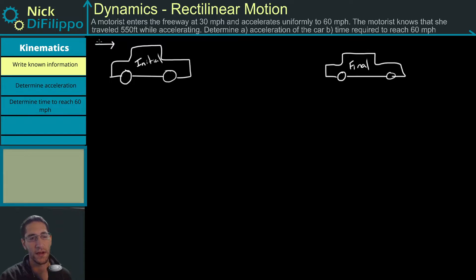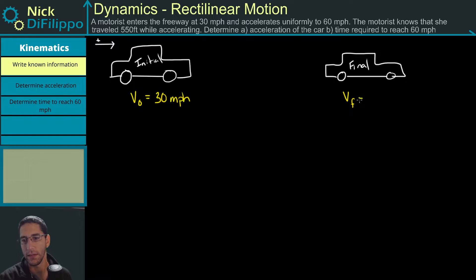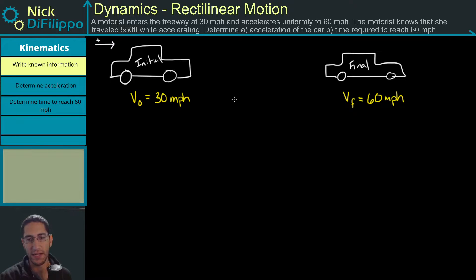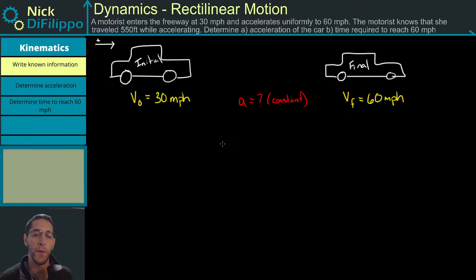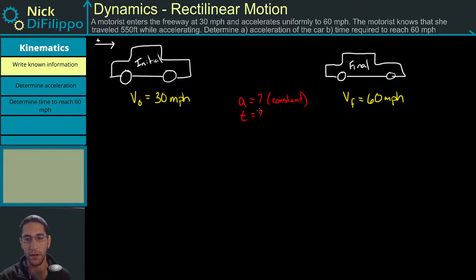I'm going to say anything going in this direction is positive. I have my initial velocity — my initial velocity is 30 miles per hour — and my final velocity is 60 miles per hour. Because I have a change in velocity I have an acceleration, and this is what I'm being asked to find. I don't know what this acceleration is, but I do know it's constant because it said uniform acceleration. We also don't know the amount of time that this acceleration took place over — those are what we are trying to find.